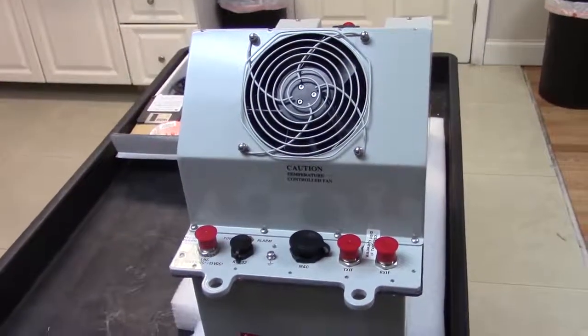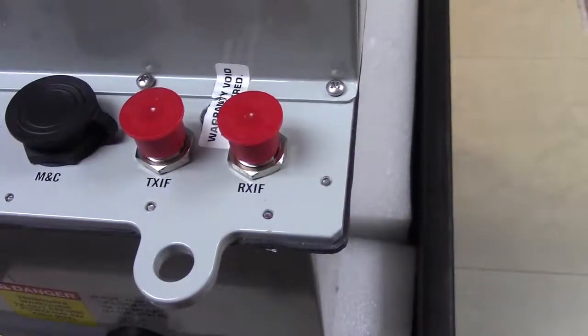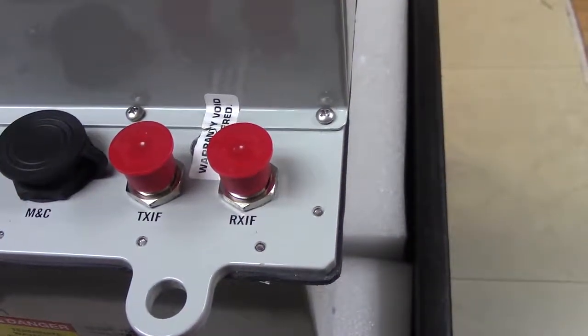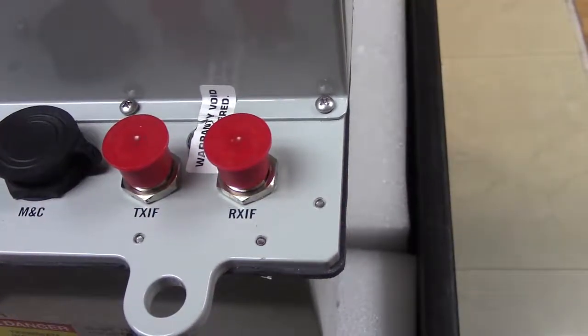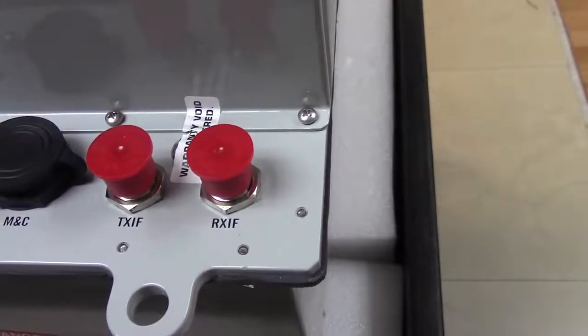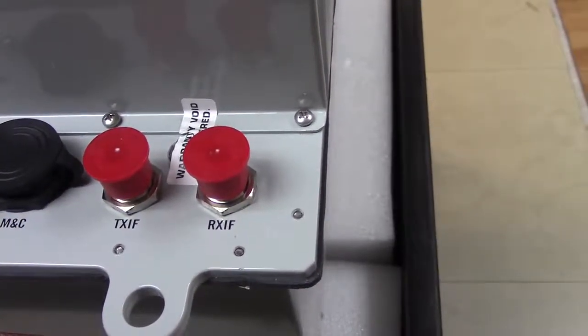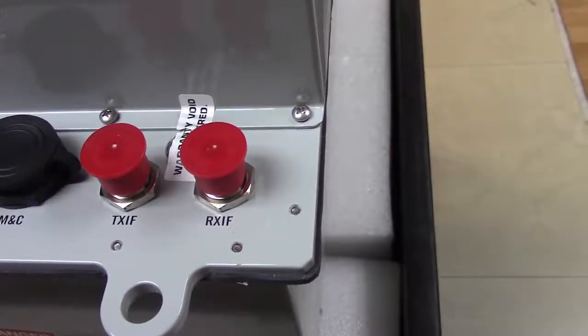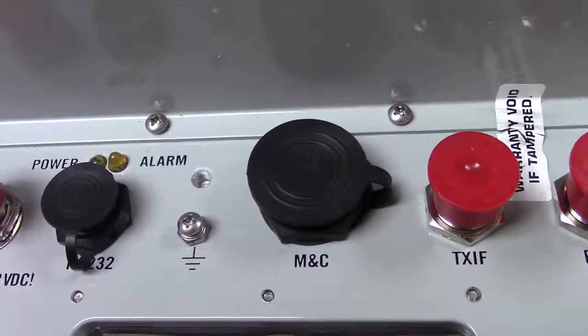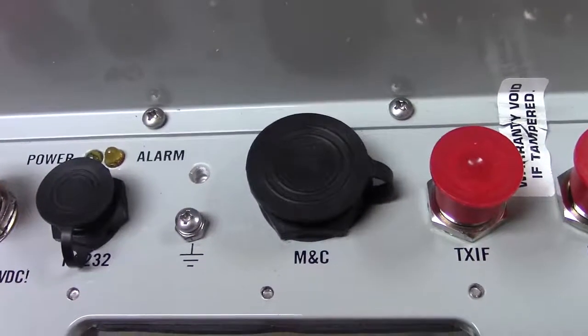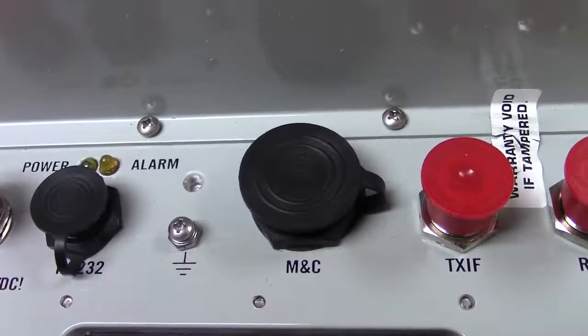This is a rugged outdoor unit and you can see by the shape of the fan that it's never been used. Over here we have the two IF connectors. They're both N-type. The TX-IF of course comes from the modem, 70 MHz modem on the transmit side, and the RX-IF goes back to the receive side on the modem. The two black connectors are for M&C to connect back to the computer for fine control of this transceiver.